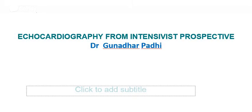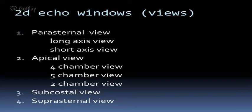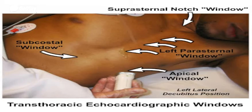Today we will discuss the different echocardiographic views. The 2D echo windows are basically four: the parasternal view, which can be long axis or short axis; the apical view, which can be four-chamber, five-chamber, or two-chamber; the subcostal view; and the suprasternal view.